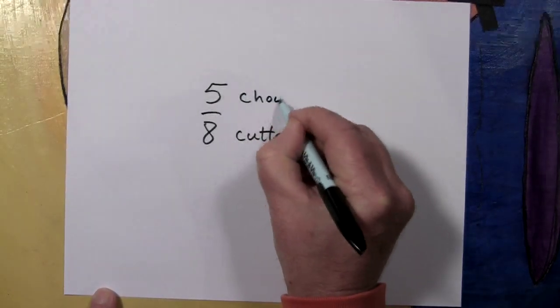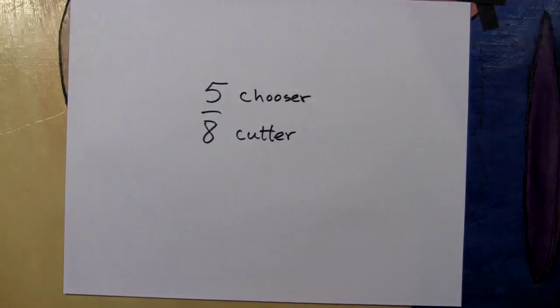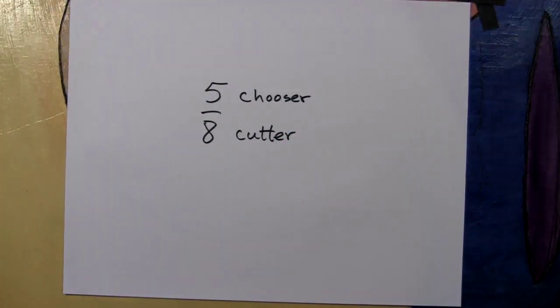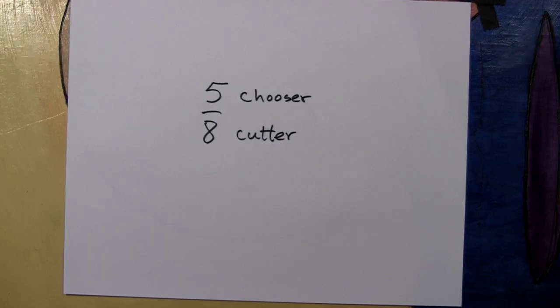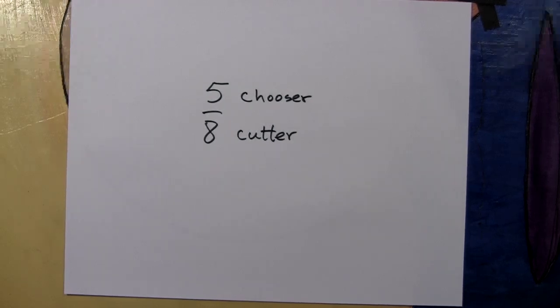And we're going to call the top of the fraction a chooser. Indeed, that top was called numerator, which when you really boil down the roots of it, it means a chooser. So we have the cutter and the chooser of a fraction.